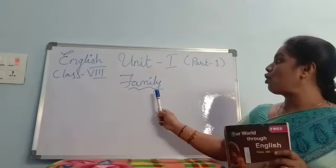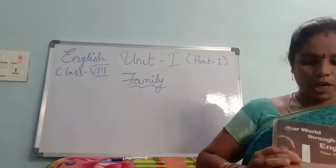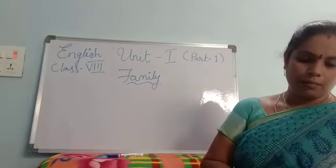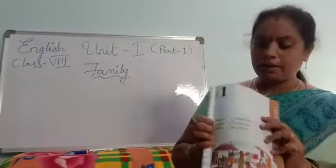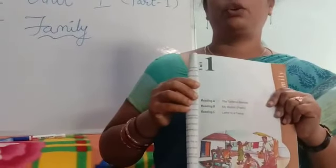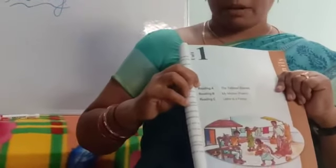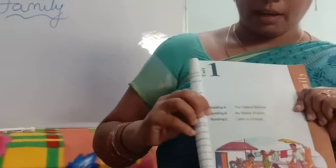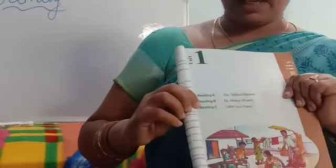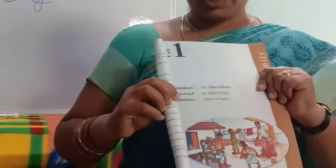The theme of the first unit is family. Before we start, I would like to show you that there are 3 lessons — 3 readings related to the first unit. They are: A reading, 'Tattered Blanket'; B reading, 'My Mother,' which is a poem; and C reading, which is a letter to a friend.